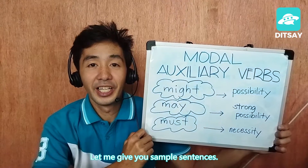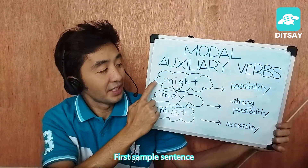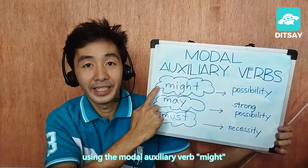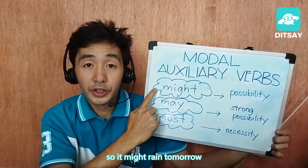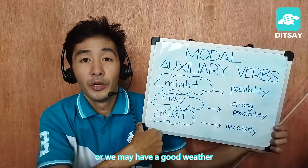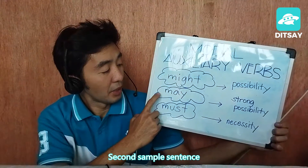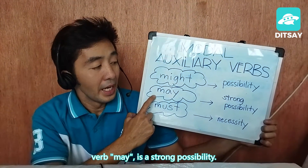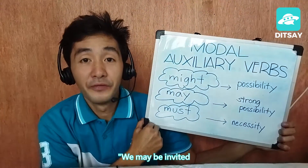To make everything clear, let me give you sample sentences. The first sample sentence using the modal auxiliary verb 'might' is: 'It might rain tomorrow.' So it might rain tomorrow, or we may have good weather — we are not very sure.